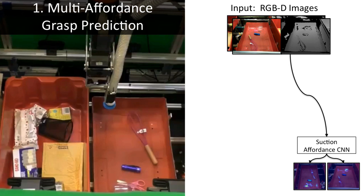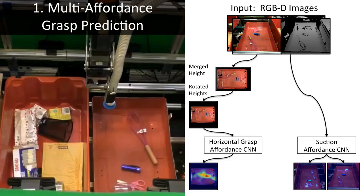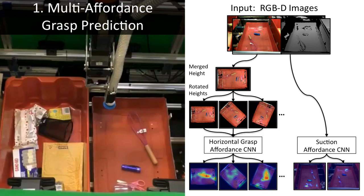In parallel, the system merges RGBD images of the scene into a joint height map, and feeds rotated height maps through a fully convolutional neural network to predict horizontal grasp affordances. Note that this structure allows the use of a unified model to predict grasp affordances for any possible grasping angle.